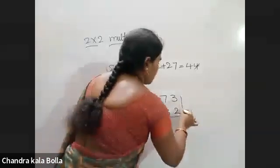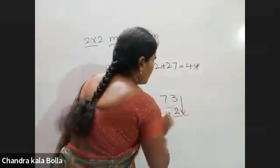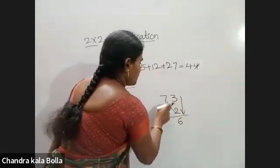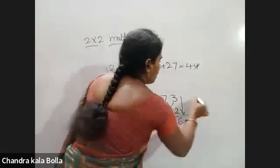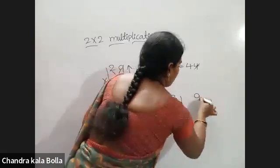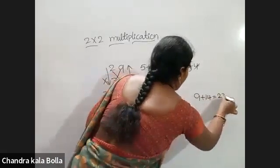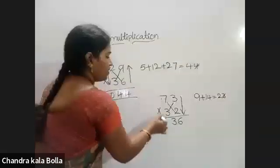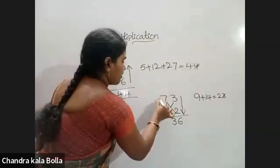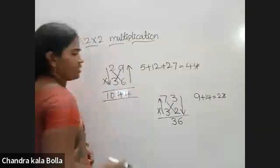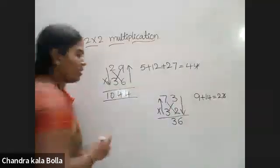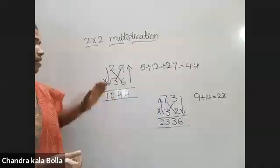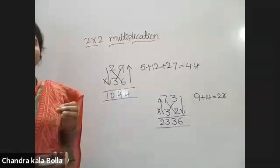For 73 into 32: ones place, up and down direction — 2 threes are 6. Next, cross multiplication: 3 threes are 9, and 7 twos are 14. 9 plus 14 is 23 — ones place value is 3, carry 2. Next, hundreds place: 3 sevens are 21. 21 plus 2 carry is 23. If you are correct, you will check — it is easy.